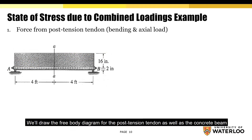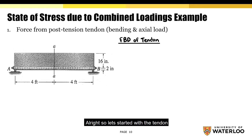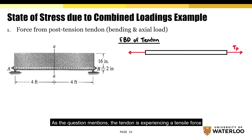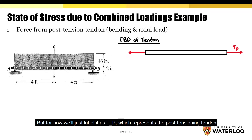On this slide we'll draw the free body diagram for the post-tension tendon as well as the concrete beam, and determine the reaction forces for both diagrams. Starting with the tendon: the tendon is experiencing a tensile force, which we'll label as TP representing the post-tensioning tendon.